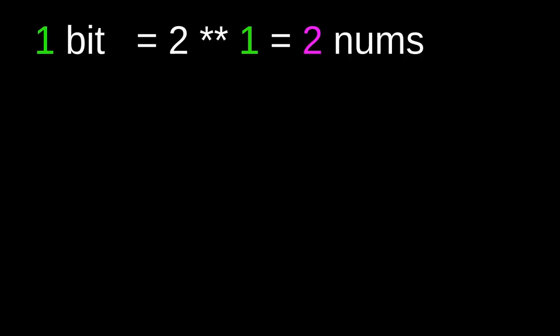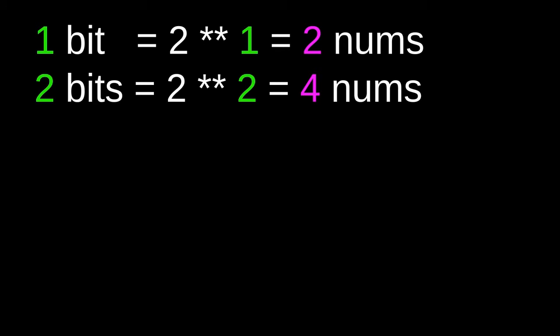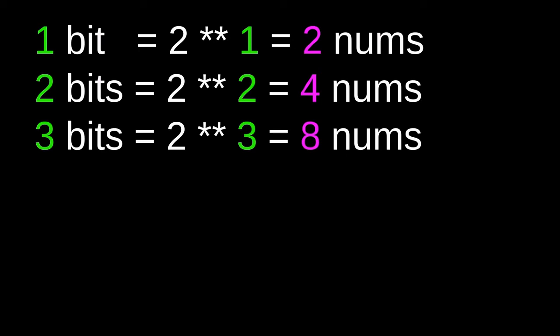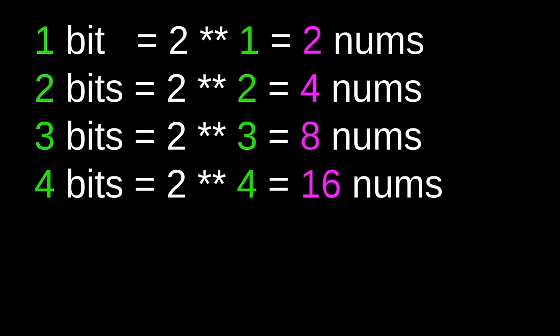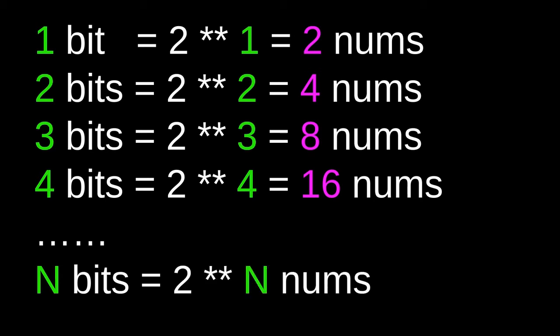Let's summarize what we found: a single bit can represent 2 to the power of 1, which is 2 numbers; 2 bits can represent 2 to the power of 2, which is 4 numbers; 3 bits can represent 2 to the power of 3, which is 8 numbers; and 4 bits can represent 2 to the power of 4, which is 16 numbers. Notice that every time we increase the bit count by 1, we double the number of values it can represent. The pattern is that n bits can represent 2 raised to the power of n numbers.